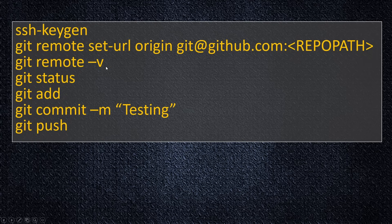Also: git remote -v to show the settings for the remote, git status, git add, git commit, and git push to push your local repository to the remote repository. Hope you enjoyed — see you in the next lecture. Bye bye.